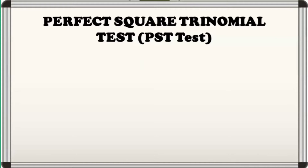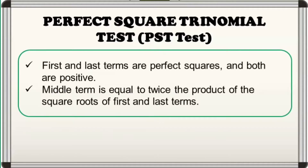Obviously, it must have three terms. But after that, what are the other requirements? Here are the two requirements: 1. First and last terms are perfect squares and both are positive. 2. Middle term is equal to twice the product of the square roots of the first and last terms.